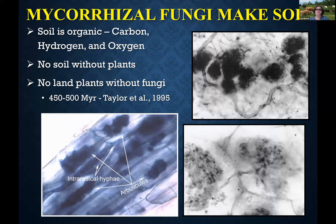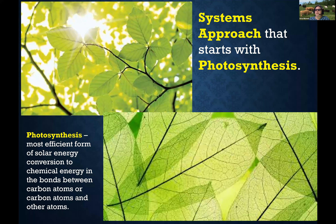We had no plants without fungi and we had no soil without plants. So we have to have these things together. In regenerative agriculture and regenerative organic agriculture in particular, it really is about having this connection between the plants and the microbial community. It's also really important that we include animals in this system. But what I really want us to focus on is a systems approach that starts with photosynthesis.